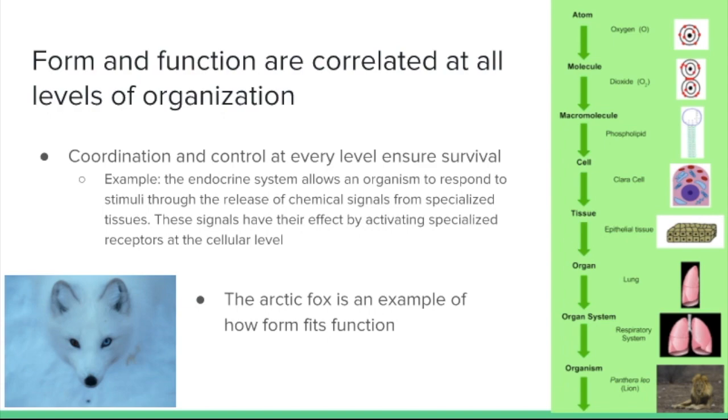And so that's looking at the level of the body system, but even just the body plan itself we'll find that form fits function. The arctic fox is a great example. Lots of organisms that live in the arctic display analogous structures. For example, the white fur of the arctic fox or the white feathers of a snow bird or the appearance of the polar bear all provide for camouflage in the arctic.